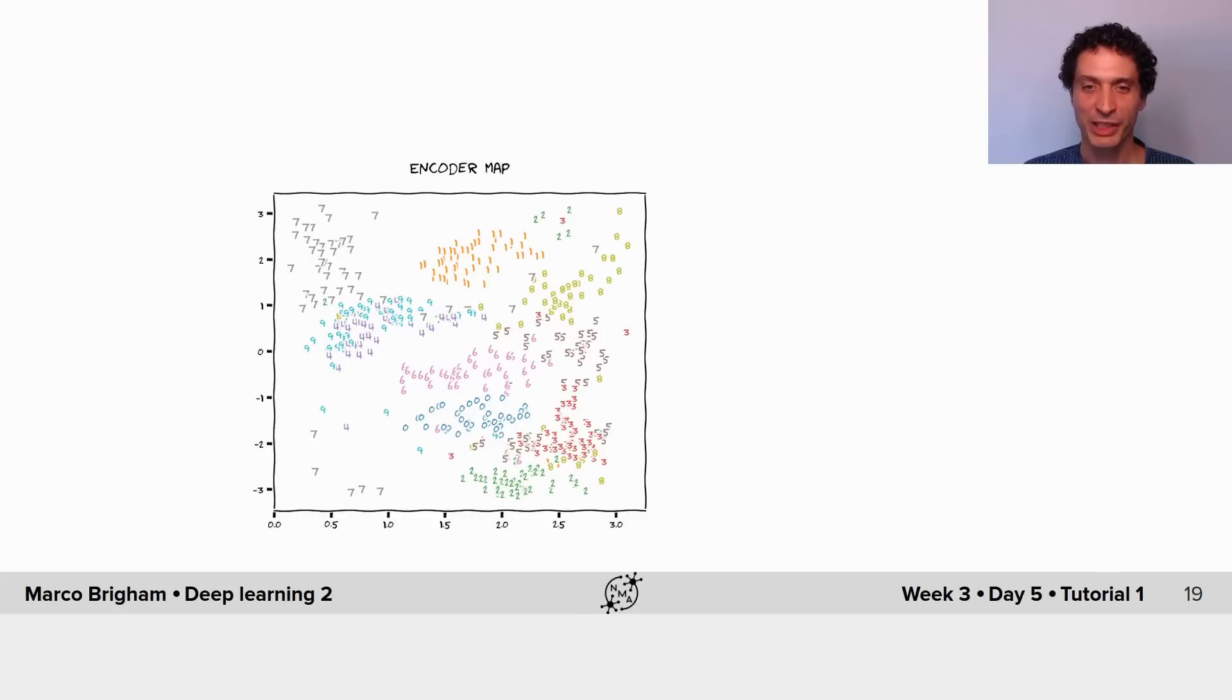The encoder map represents each sample by its class digit in the latent space, the bottleneck layer, here is the y coordinates and here is the x coordinates.